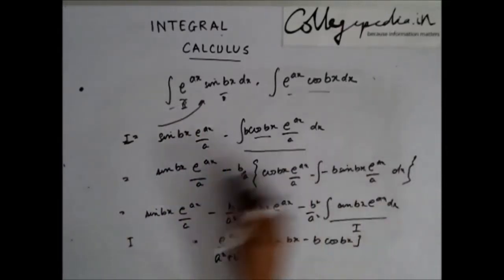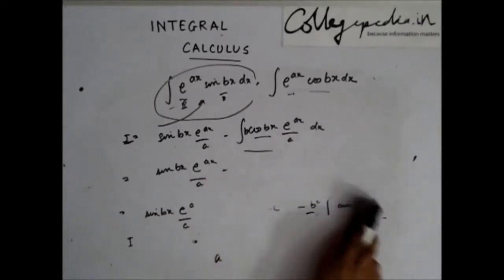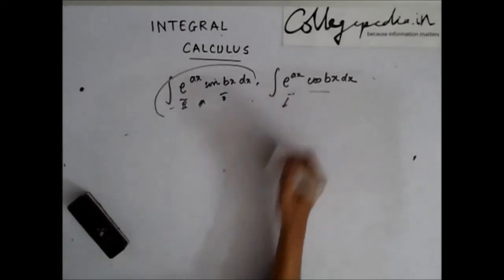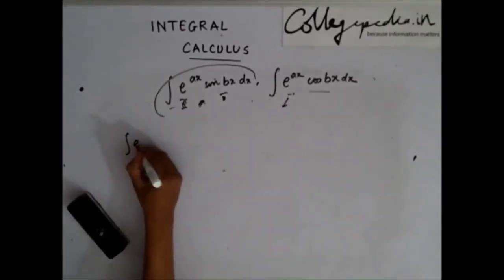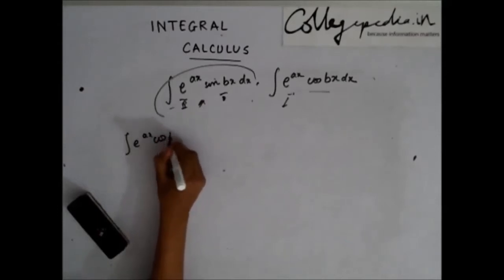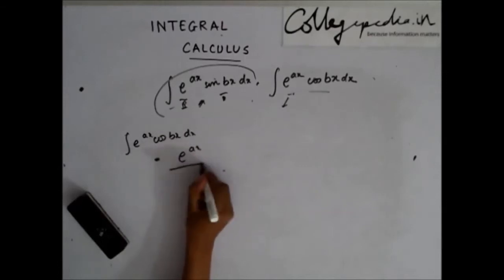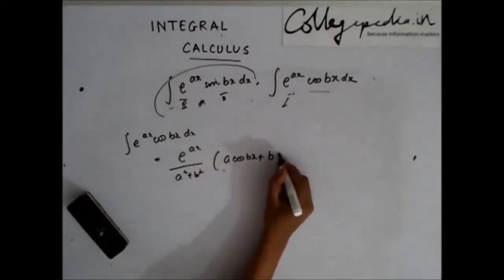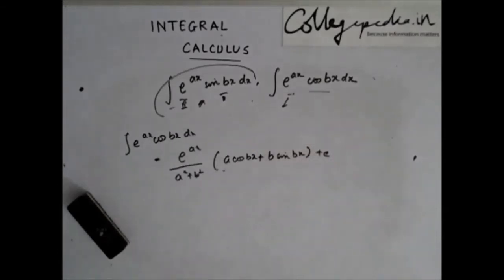I have solved this first example. Try solving the cosine form on your own. The formula is: integral of e^(ax)·cos(bx) dx equals e^(ax) divided by (a² + b²) times (a·cos(bx) + b·sin(bx)) plus constant c.